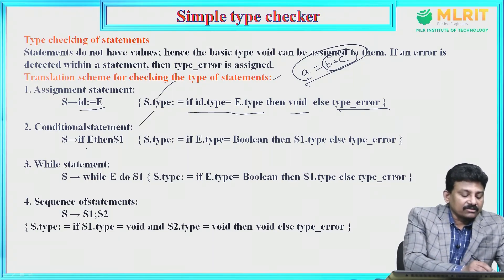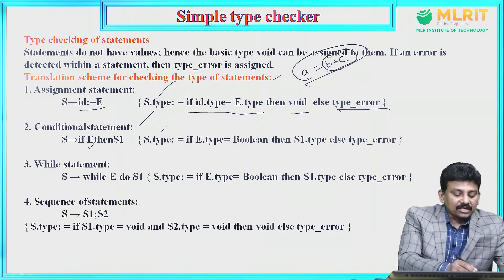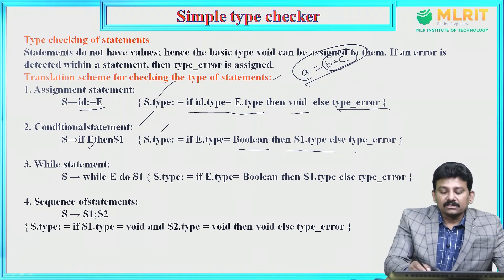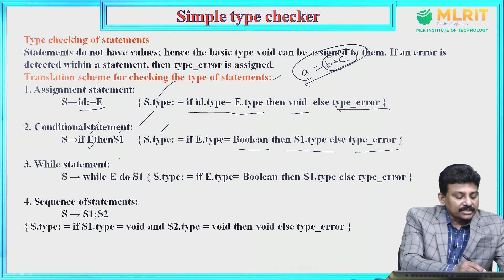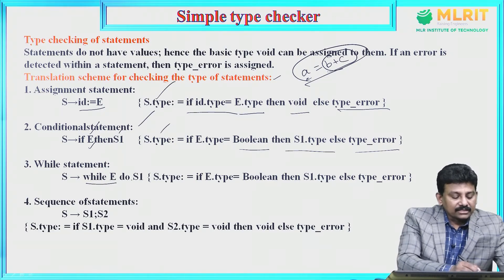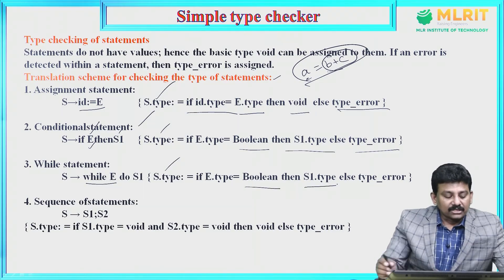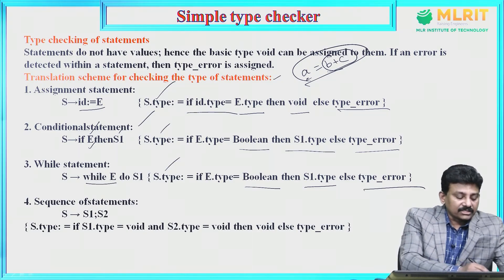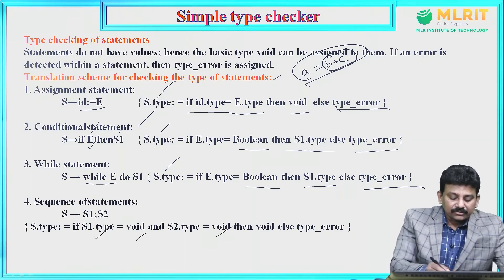For a conditional statement, S derives if E then S1: S.type = if E.type is boolean, then S1.type, else type_error — meaning if the expression is true, S1 will be executed. For while statement, S derives while E do S1: S.type = if E.type is boolean, then S1.type, else type_error. For a sequence of statements, S derives S1 semicolon S2: S.type = if S1.type is void and S2.type is void, then void, else type_error.